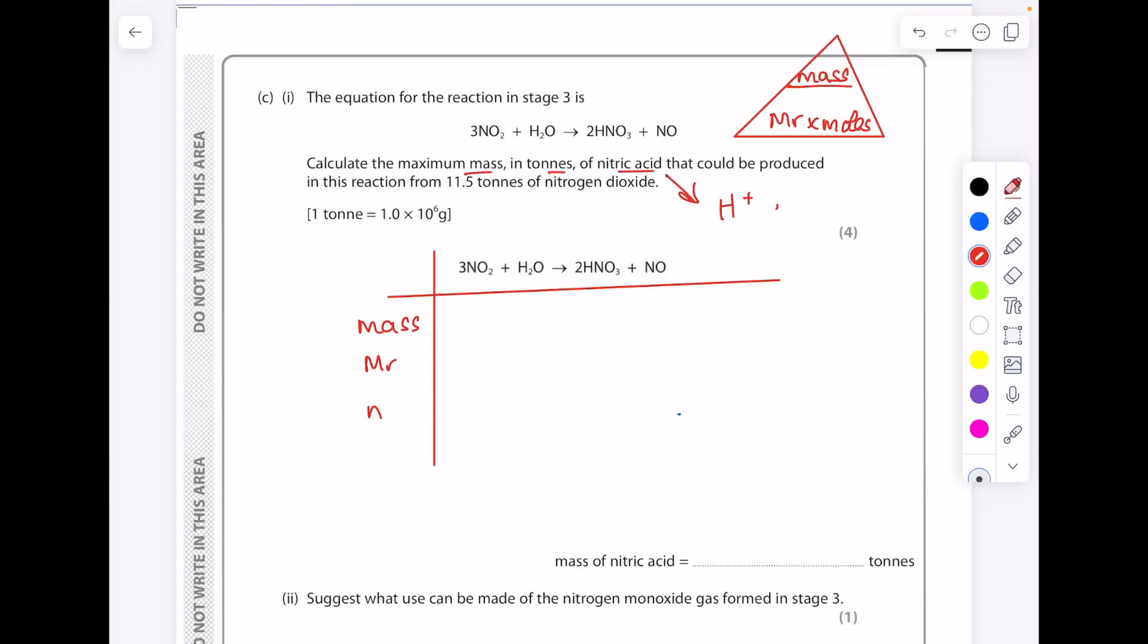We're being asked to find the maximum mass in tons of nitric acid. Acids are H-plus donors, so you are looking for something which contains H-plus ions as being your acid. We're after this mass here. We've been told that we have 11.5 tons of nitrogen dioxide. I don't need to sort out the units because my final answer is in tons. They've only put that there to confuse you. Do not allow them to confuse you.